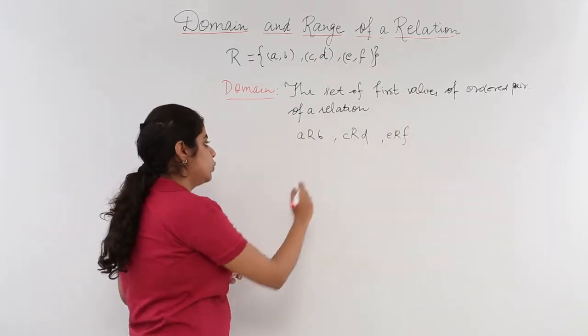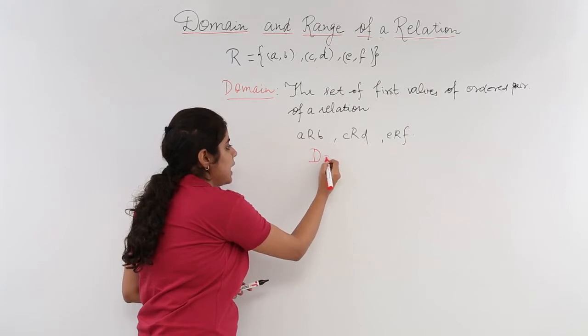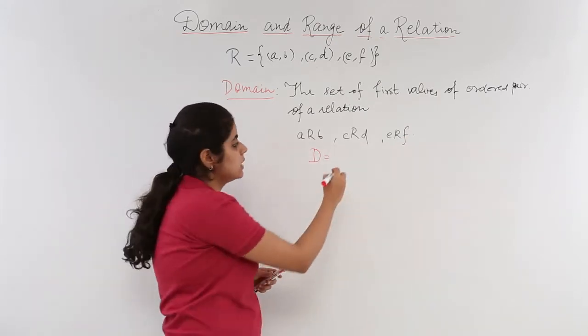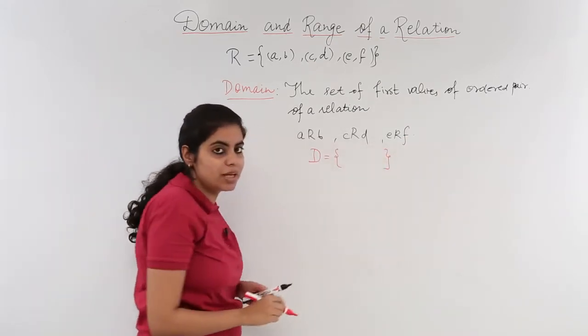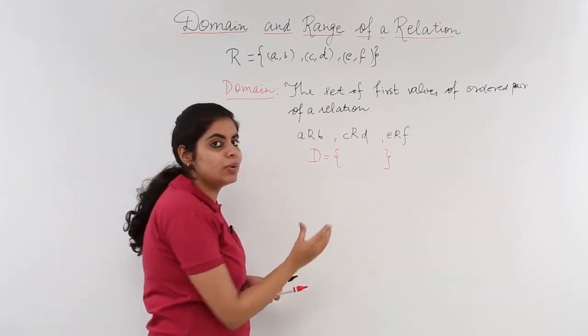What would be the domain? The domain is represented as D and since it is a set you will write in the curly braces and you will put the value inside.